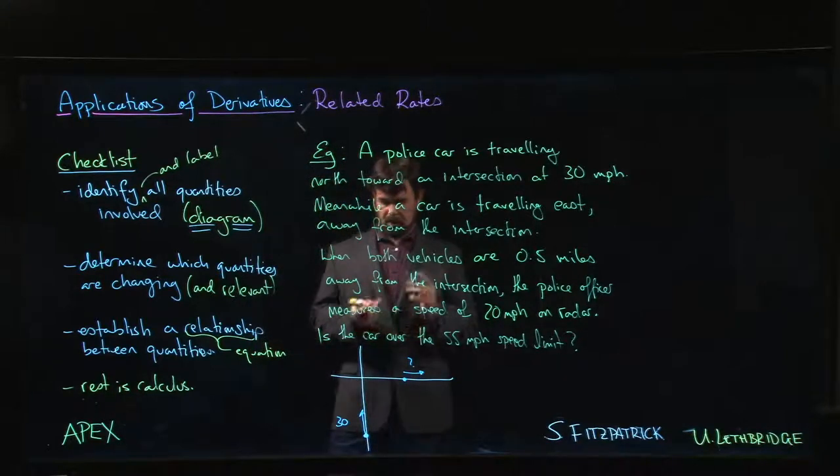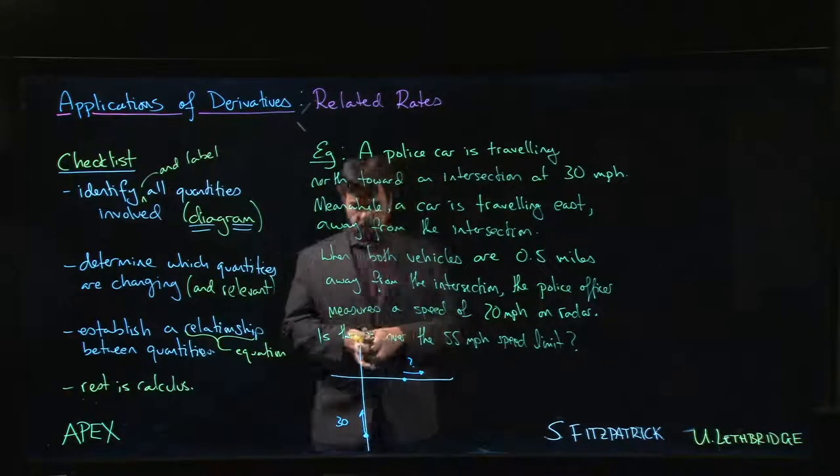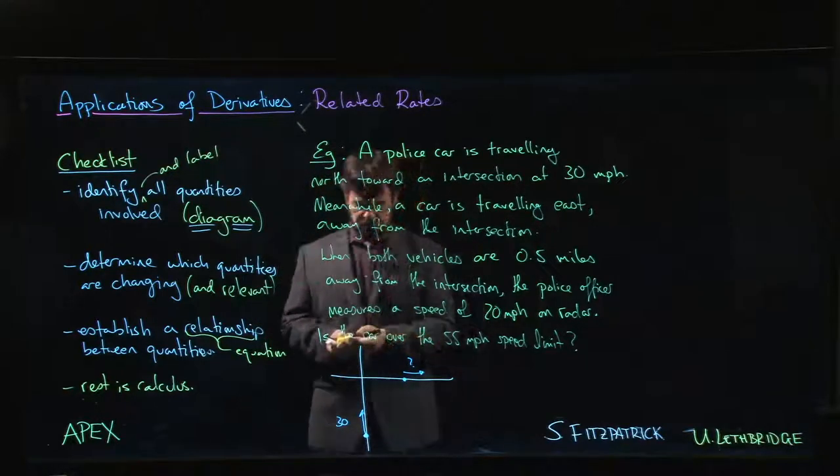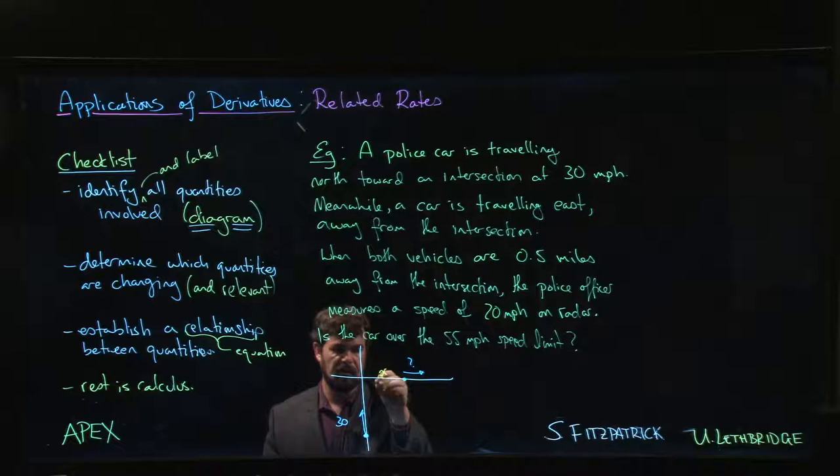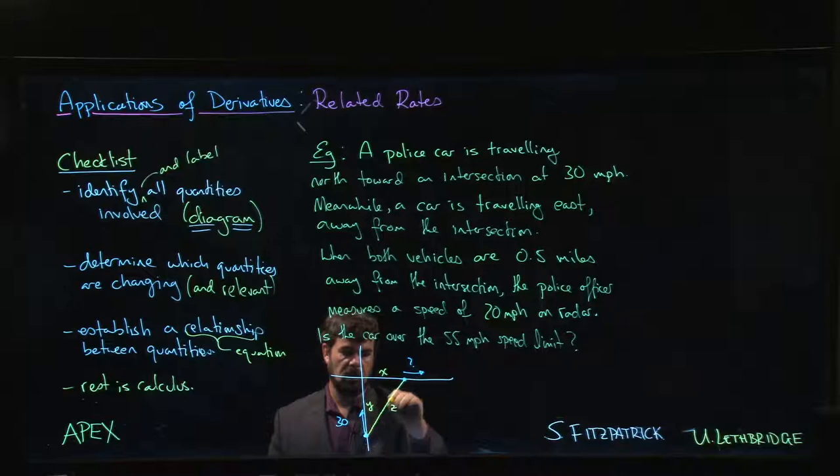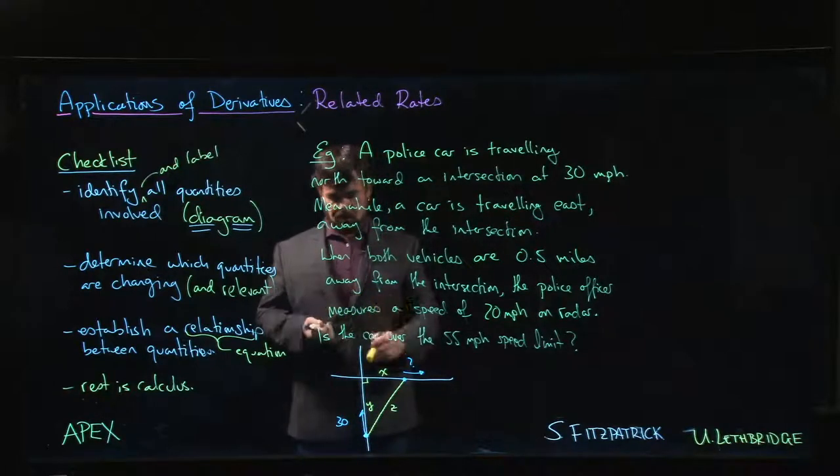So that's what we're starting with. Now what we want to do here is introduce three distances. Let's call this X, which is going to be the distance from the intersection to the car. We're going to let Y be the distance from the police car to the intersection, and we're also going to draw in the hypotenuse here and label that Z.